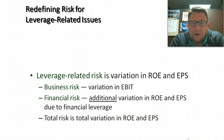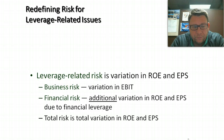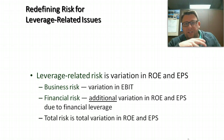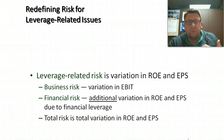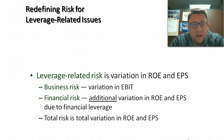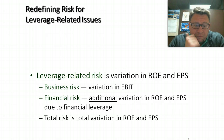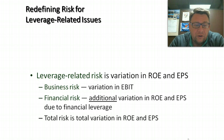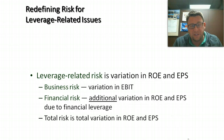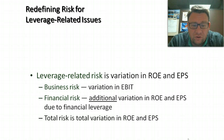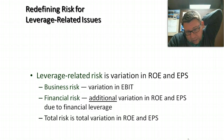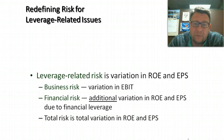Leverage-related risk is a variation in ROE and earnings per share. Business risk relates to changes in our sales price, costs, and so forth, and that causes variation in EBIT — earnings before interest and taxes, or operating income. Financial risk is an additional variation in return on equity and earnings per share due to financial leverage. Total risk is the total variation in return on equity and earnings per share.